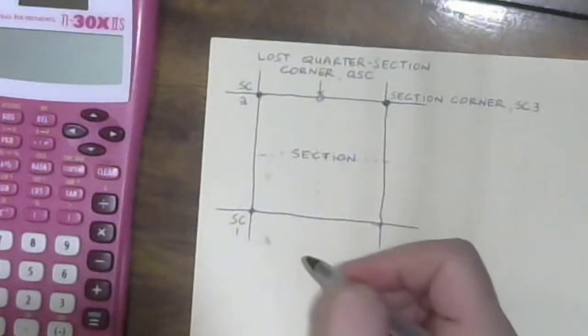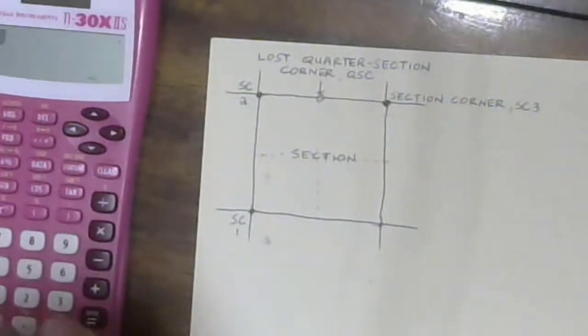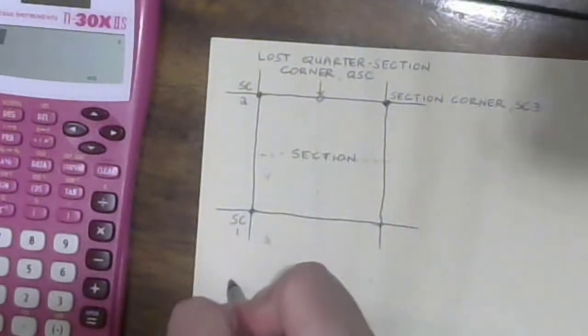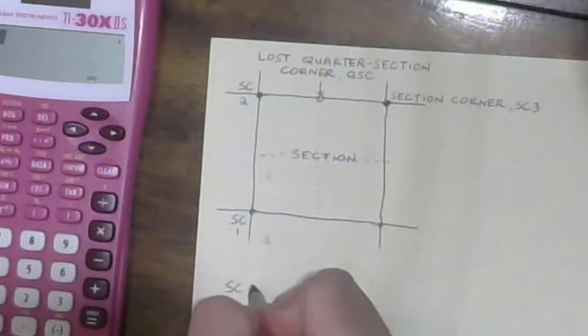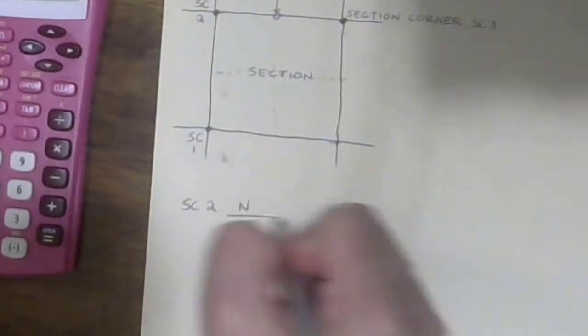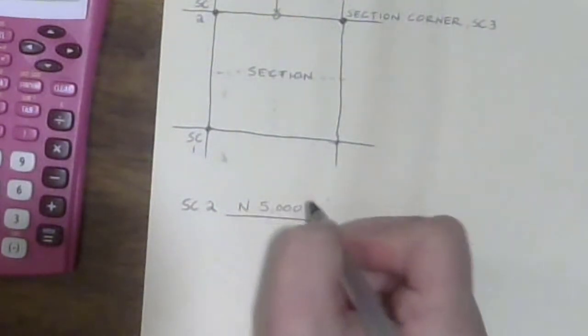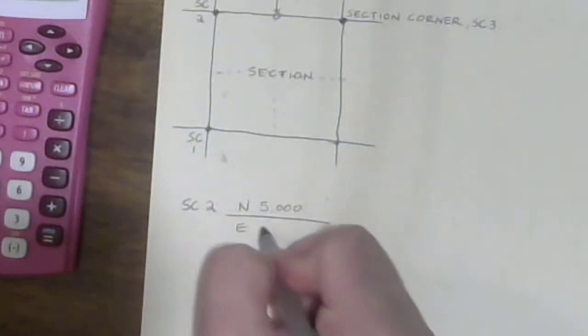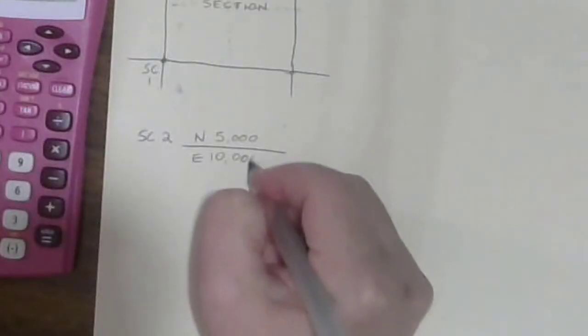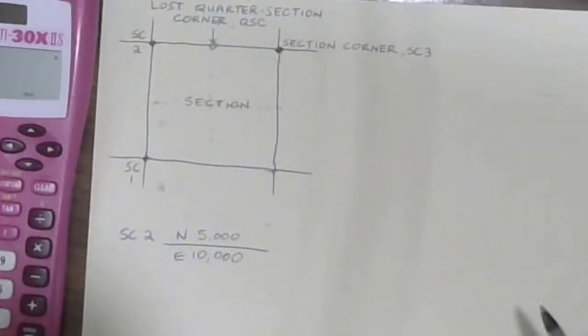So let's give ourselves some numbers to work with here. Let's say that section corner two has a northing of 5,000 and an easting of 10,000. And let's say that section corner three has...